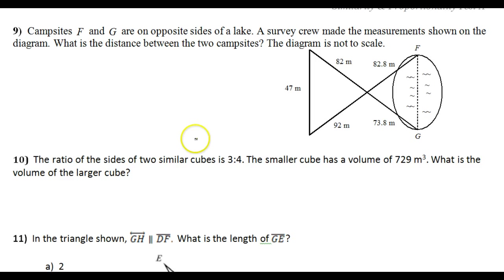Okay, let's look at one more example. Campsites F and G are on opposite sides of a lake. A survey crew made the measurements shown on the diagram. What is the distance between the two campsites? The diagram is not to scale. All right. Well, like the problem said, these are the campsites on opposite sides of this lake. And we're trying to find the distance between the two campsites. So that would be x, like right here.